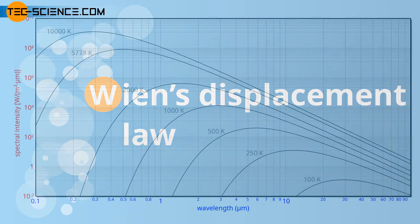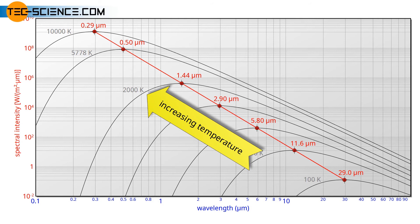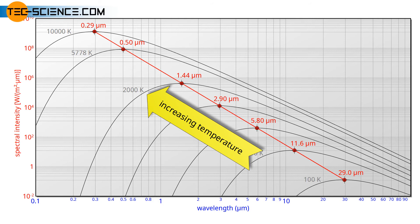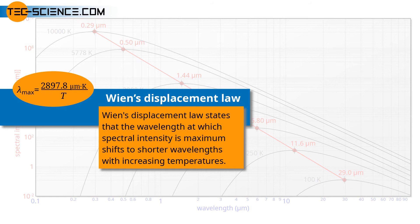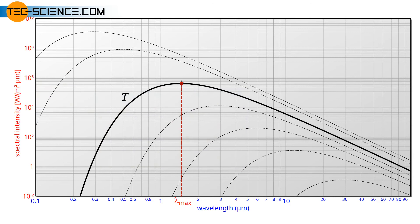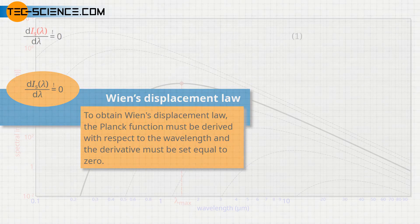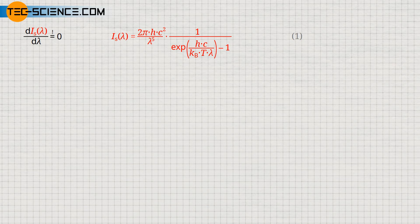Wien's Displacement Law: the spectral distribution as a function of temperature is now to be examined more closely. It turns out that the maximum of the curve shifts with increasing temperature to ever shorter wavelengths. The dependence of this wavelength lambda_max on the temperature is given by Wien's Displacement Law. This law can be obtained by determining the maximum of Planck's law for a given temperature — the Planck function must be derived with respect to the wavelength. By using the product rule and setting the derivative equal to zero, one gets the following equation. We will deal with the derivation quite quickly.